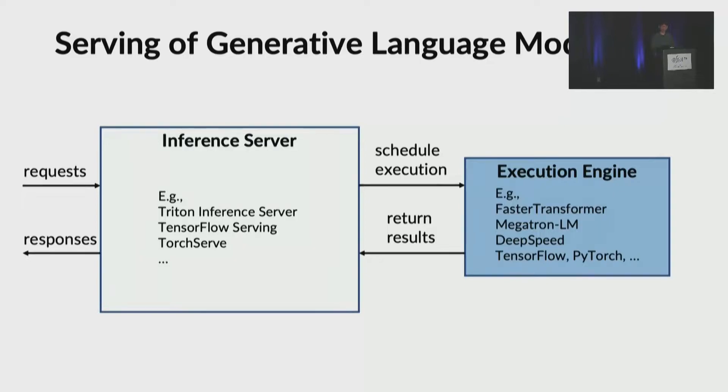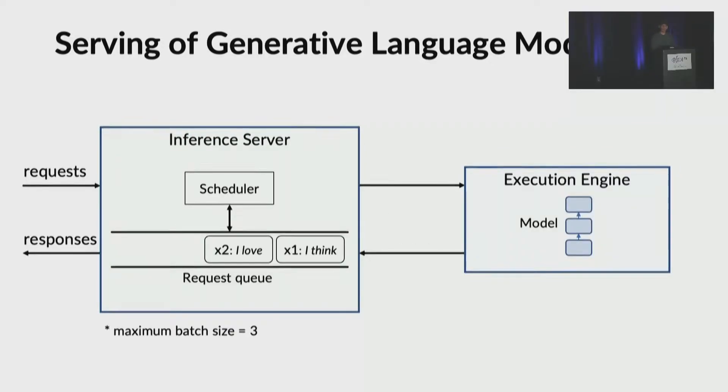Serving LLM models consists of two components: the inference server and the inference execution engine. Let me explain how they interact with an example. Suppose we are processing two sentence completion requests, x1 and x2, from clients. Let's assume that the maximum batch size is three. The inference server chooses to pass as a batch and forwards it to the engine. The engine processes the batch and returns outputs for x1 and x2. The inference server returns the responses back to the client. The current system looks perfectly fine, but it has big limitations.